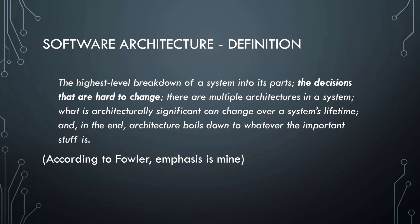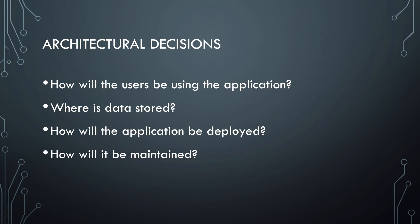Martin Fowler observes that a software architecture makes decisions that are hard to change, since they guide the overall structure of a software system. Architectural decisions are on a higher level than software design decisions. They establish how users will be using the application — web based, on the phone, etc. — where the data is stored, how the application will be deployed and how it will be maintained.